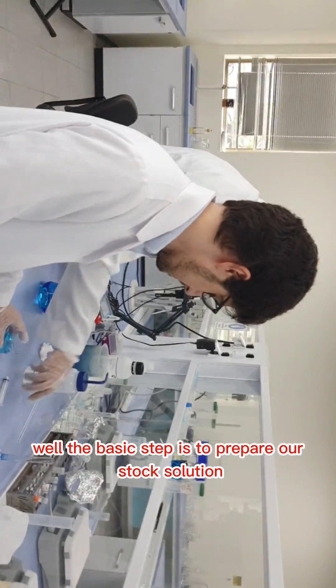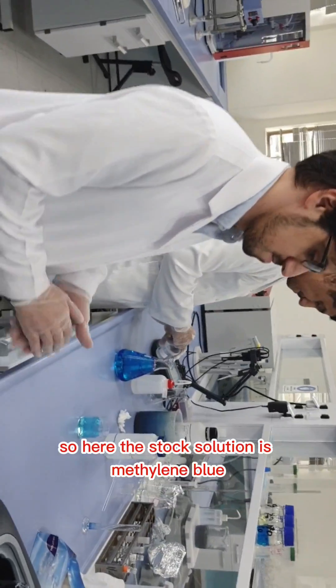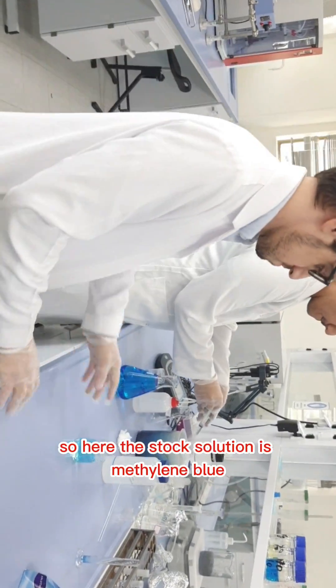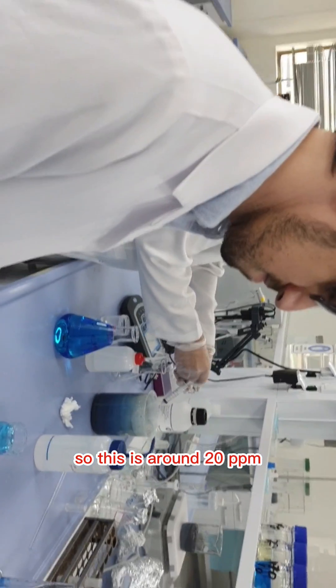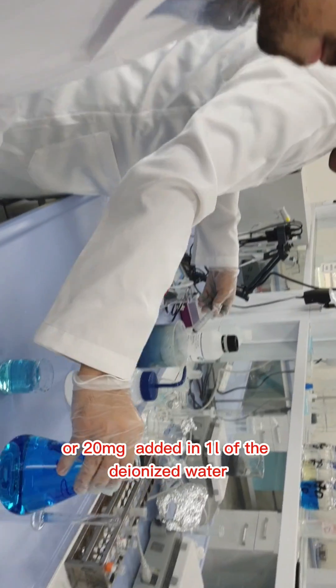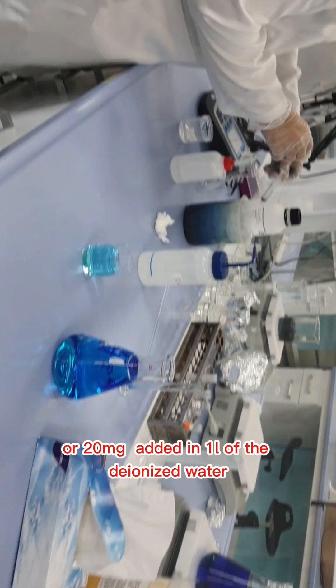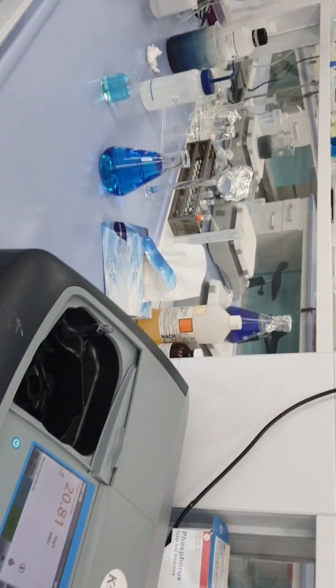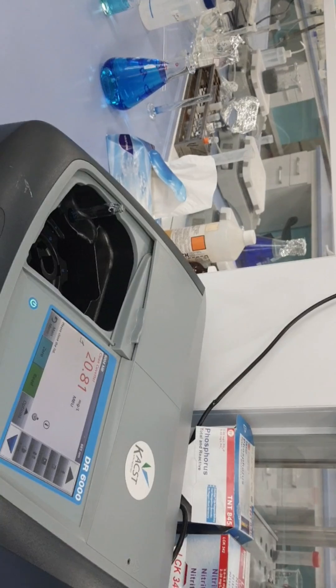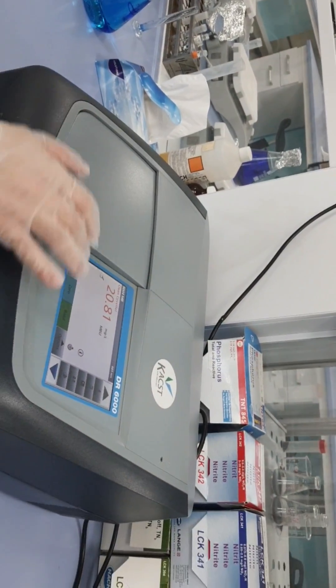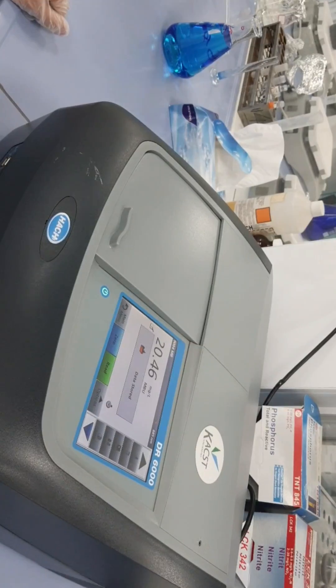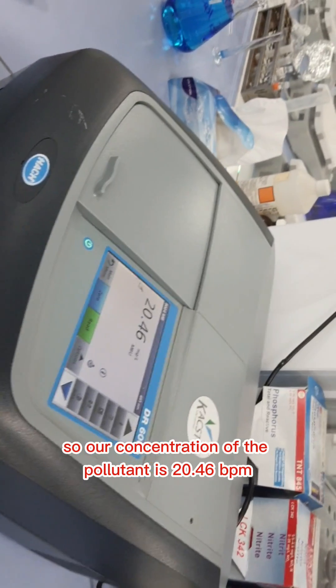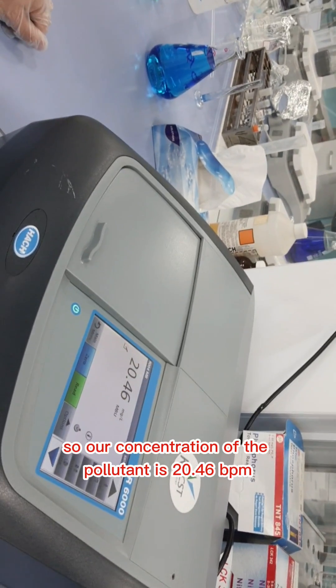The basic step is to prepare our stock solution. The stock solution is methylene blue, around 20 ppm or 20 mg added in 1 liter of deionized water. The next step is to measure the pollutant concentration. Our concentration of the pollutant is 20.46 ppm.